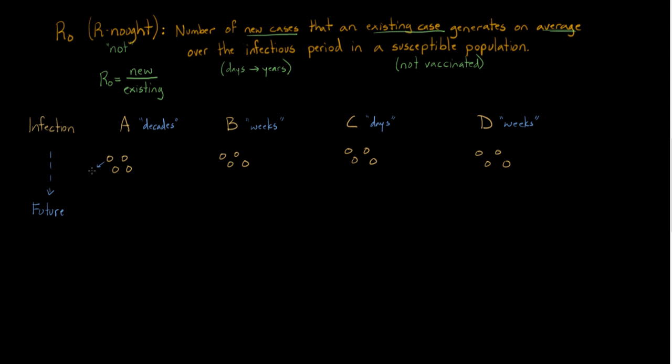You come back at some time point in the future. For A, you find out that this person gave it to somebody and this person gave it to somebody. These other two didn't end up giving it to anybody. So the R0 is going to be new cases, which is two, over old cases, which is four, or existing cases. So R0 equals 0.5 here.